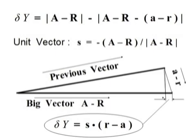Big A minus R is the vector from receiver to satellite A, and little a minus R is the change in that vector from a second ago.